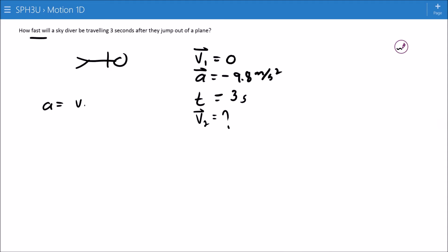The equation here is that A equals V2 minus V1 over T, negative 9.8 meters per second squared, equals V2 minus 0, time of 3 seconds. Multiply both sides by 3 seconds.